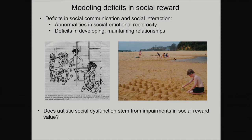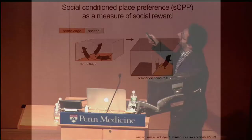The other main symptom I want to discuss is social deficits — abnormalities in social-emotional reciprocity and difficulties developing and maintaining relationships. A hypothesis in the field is that some social dysfunction stems from impairments in social reward: the idea that social interaction has an inherently rewarding property. Mice are quite social and communicate through smell and ultrasonic vocalizations, so we can measure those things.